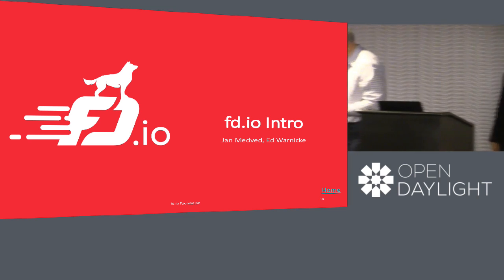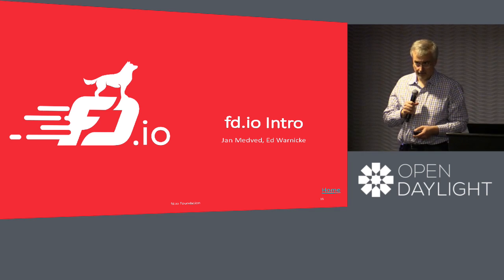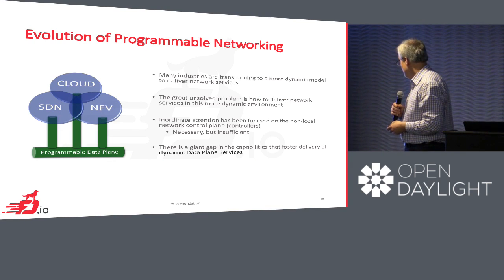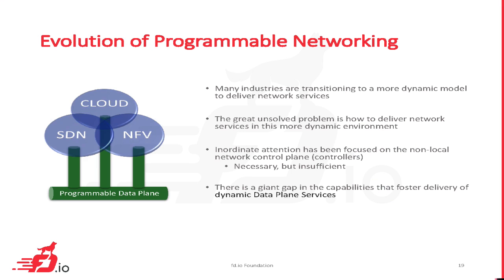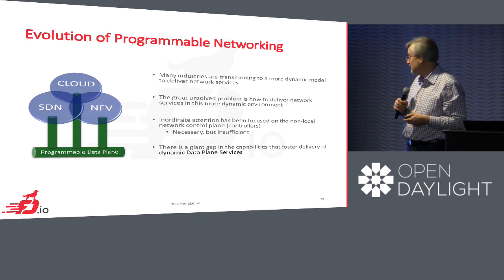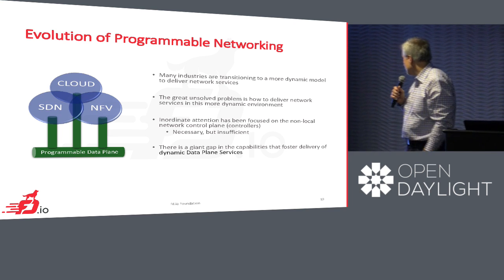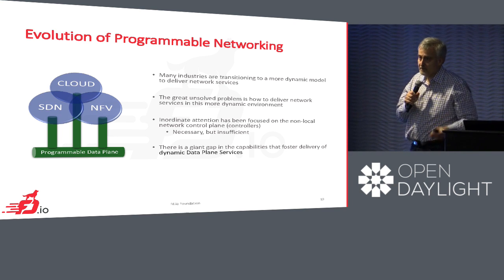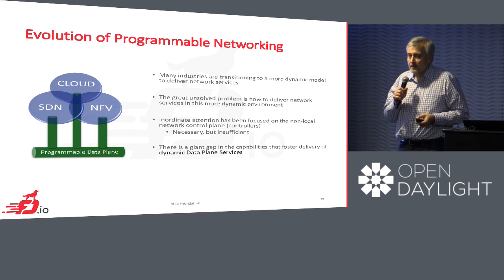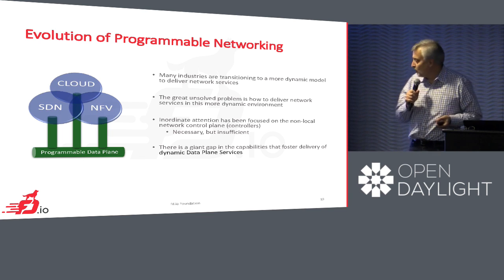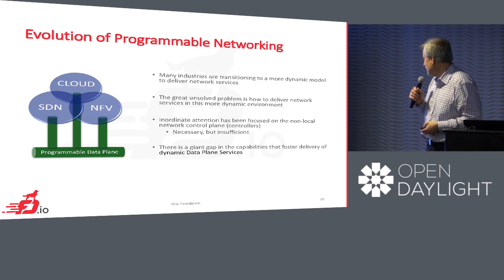I'll be talking about FD.io. It's a new initiative in the Linux Foundation designed to further the evolution of programmable networking. We have the dynamicism, programmability, and flexibility happening in SDN, cloud, and NFV. But one of the big unsolved problems is how to deliver network services in this more dynamic environment. Some attention has been focused on the non-local control plane, on controllers — they have cornered all the limelight — but the humble forwarding elements haven't really had much work apart from OVS.